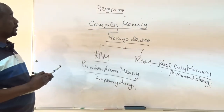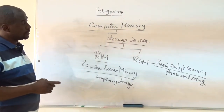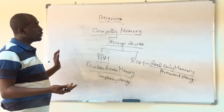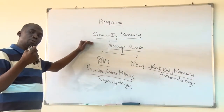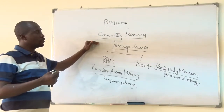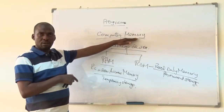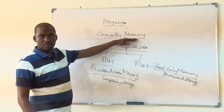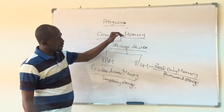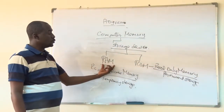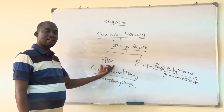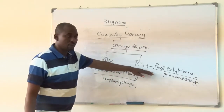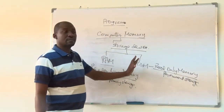I decided to explain about computer memory because a computer accepts data as input and stores data. Wherever you take data into the computer, the data must be stored somewhere — that's why I'm introducing memory here. The data is going to be stored in the computer memory, either RAM or ROM. My interest here is to talk about the RAM, not the ROM. The ROM is the hard disk, which stores things permanently.